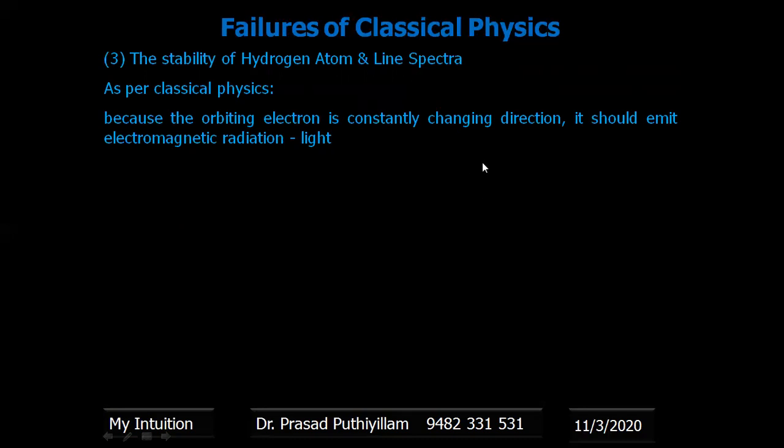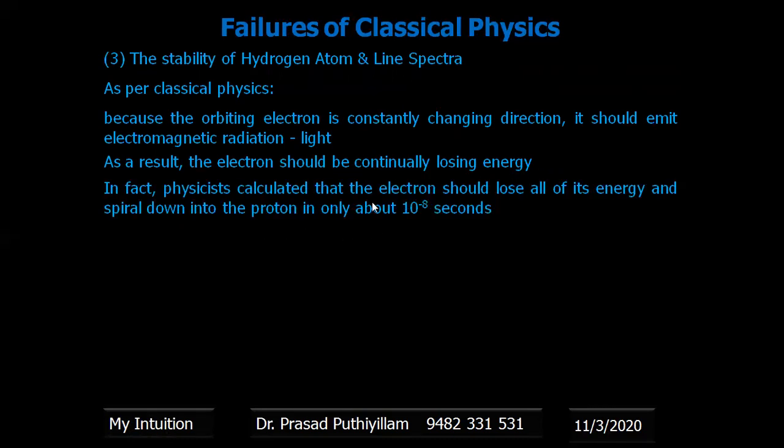Because of the orbiting electron in an atom constantly changing direction, and as the direction changes or velocity changes, there will be acceleration. That acceleration of a charged particle should emit electromagnetic radiation or light. As a result, when electromagnetic radiation is emitted by the electron, the electron should be continuously losing energy.